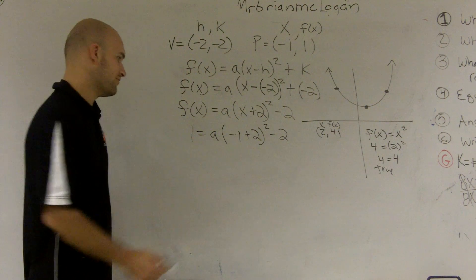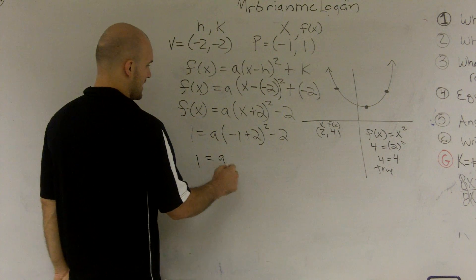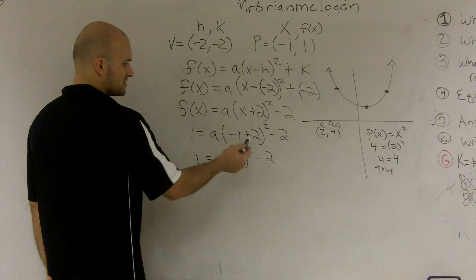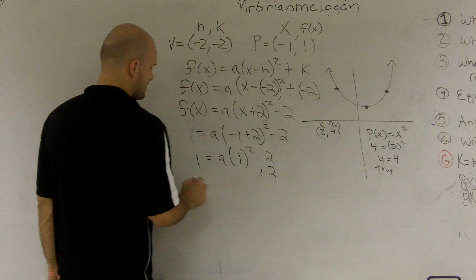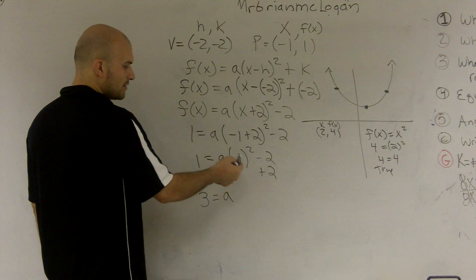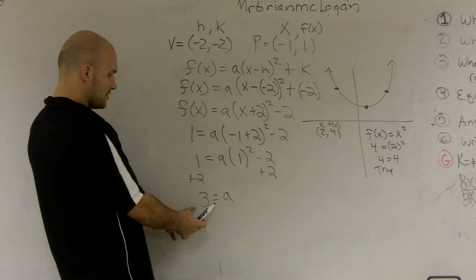So now what I have to do is just solve for a. 1 equals a, negative 1 plus 2 is 1 squared minus 2. 1 squared is going to be 1, so I'll add 2. 3 equals a because 1 squared is 1 and 1 times a is a. So therefore, now I know what a is.